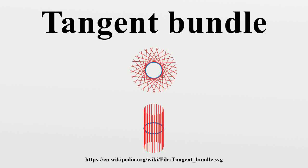The tangent bundle comes equipped with a natural topology. With this topology, the tangent bundle to a manifold is the prototypical example of a vector bundle. A section of the tangent bundle is a vector field on M, and the dual bundle is the cotangent bundle, which is the disjoint union of the cotangent spaces of M.